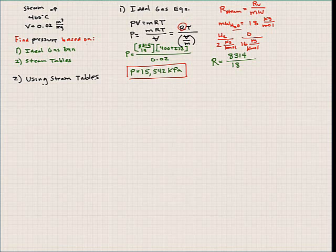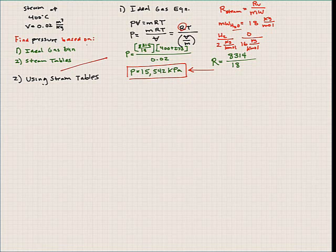Now we're not totally sure yet if this is superheated vapor or saturated vapor. You might say it's 400 degrees Celsius so it has to be superheated, but we're operating at a very high pressure, so we may actually be in a saturated state. We simply don't know yet. We can check before we use the steam tables to make sure we use the appropriate ones.